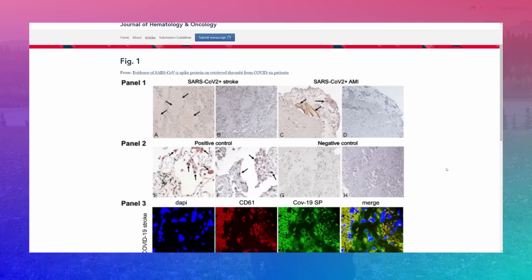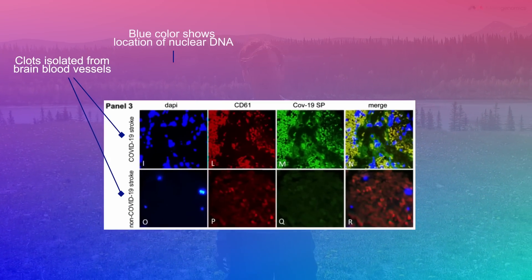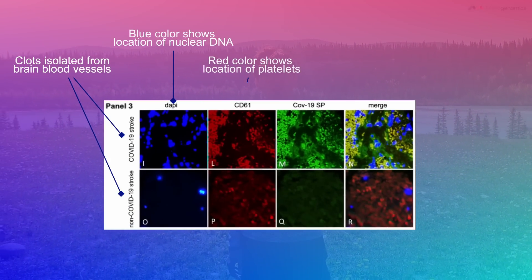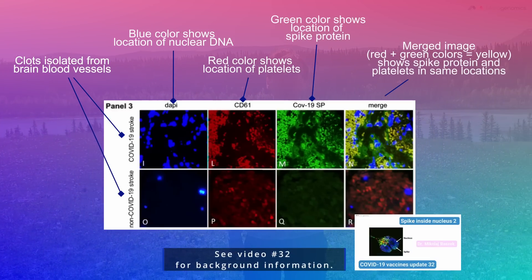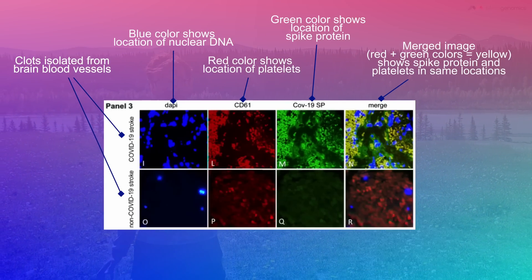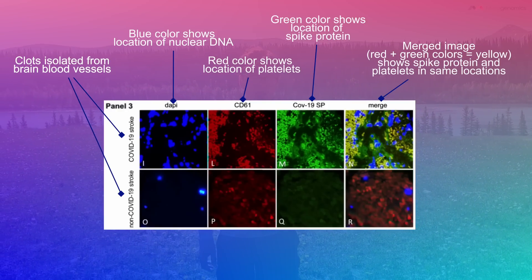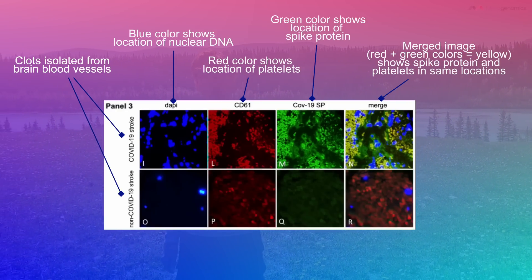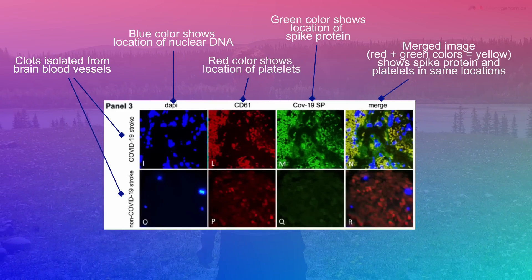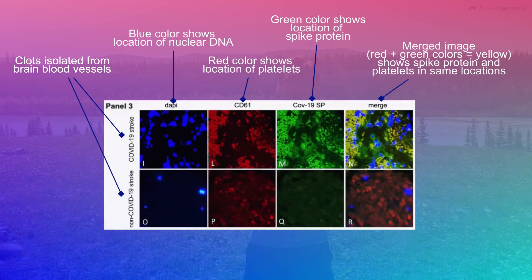The additional stain color you might see is DAPI, which we've talked about in the past as well. That stains where the nuclei of cells are and basically shows you where the genetic material inside the nucleus is. These are really amazing images — they show you direct evidence that spike protein is found in the clots of COVID-19 patients who suffered from stroke or heart attack. Negative controls did not show any of this.